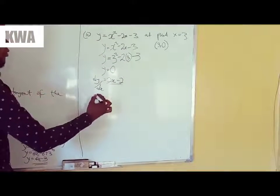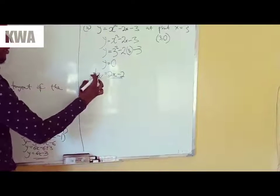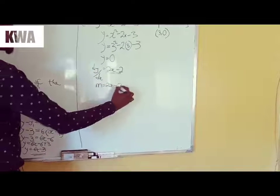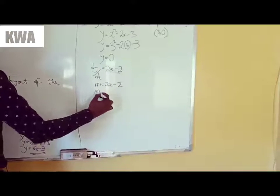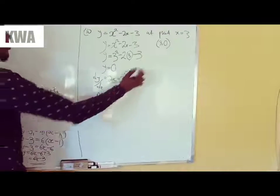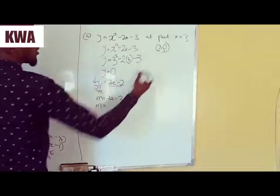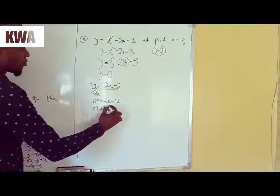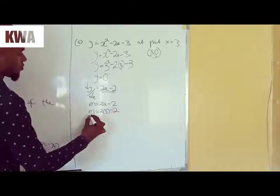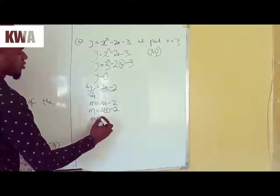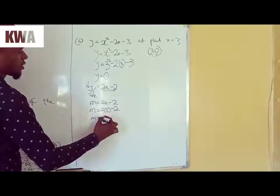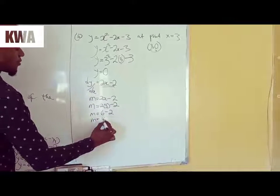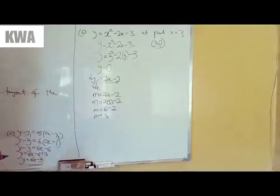Then we are going to find our gradient, which I said you replace the dy/dx with m. So m equals 2x minus 2. So m equals, where there is x, this is x, this is y, so where there is x I am going to put 3. So this will be 2 then 3 minus 2. So m equals 2 times 3, 6 minus 2. So m equals 4. So that's the second step, you have found your gradient.